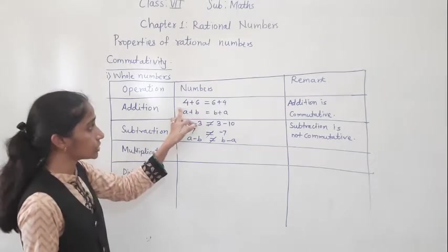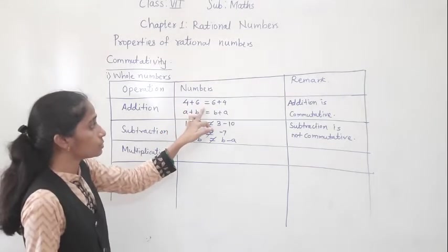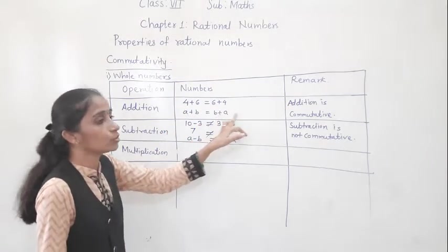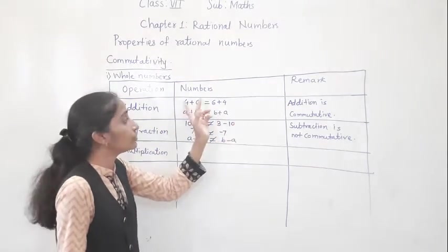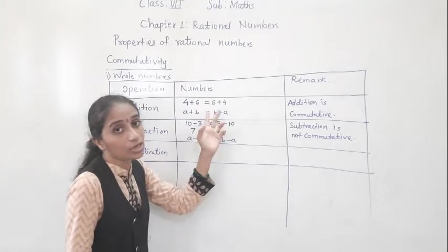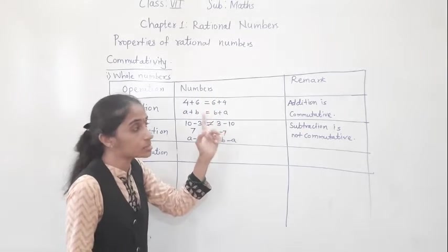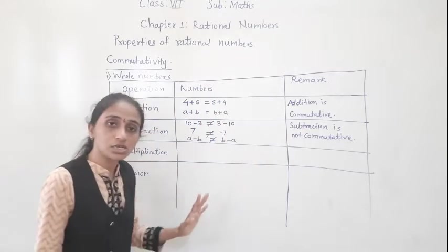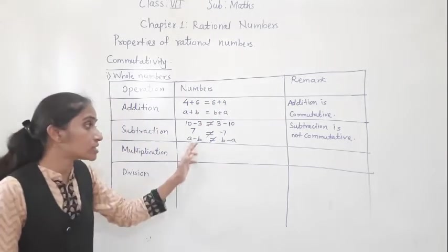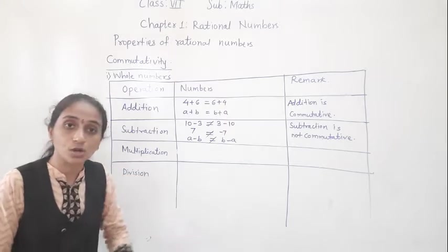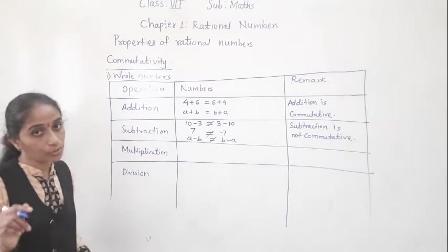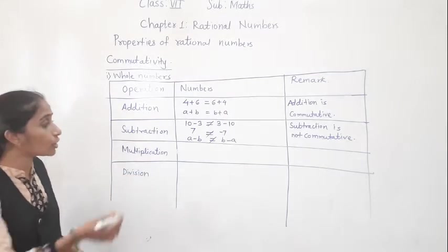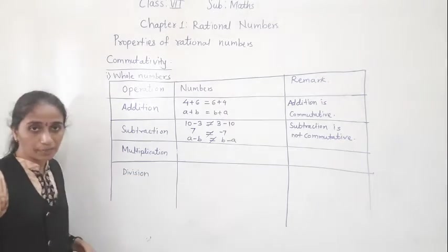In addition, A plus B is equal to B plus A — even when we change the order we get the same answer, so addition is commutative. But subtraction is not commutative. Now we will see for multiplication.